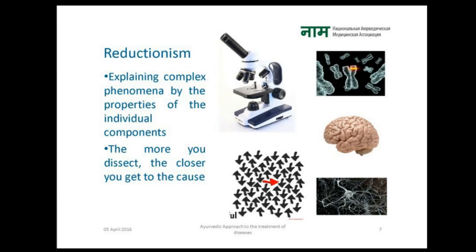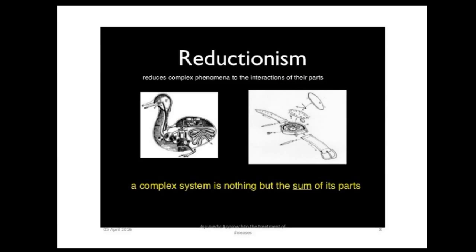Reductionism means explaining complex phenomena by the properties of individual components. The body is dissected into small parts — organs, tissues, cells, each part of the cell — and studied, based on the belief that the more you dissect, the closer you get to the cause of the problem. This concept sees the whole body as a combination of cells and small functions.